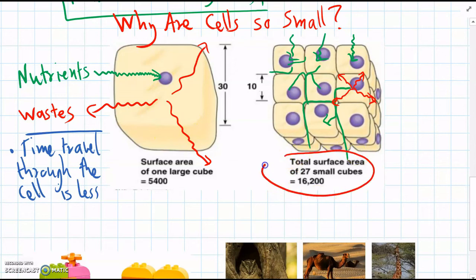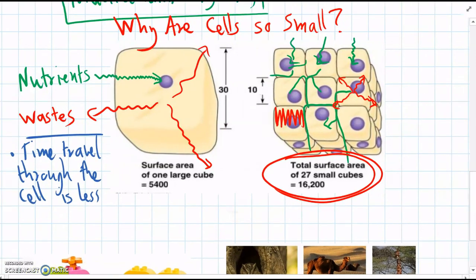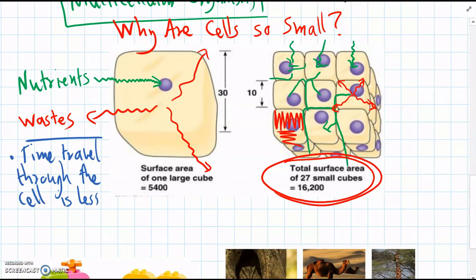So we can see here, if we look at the surface area—if we calculate it using maths—the total surface area of all these small cells is a lot bigger than the total surface area of one large cell.